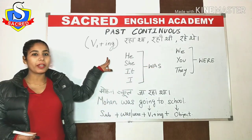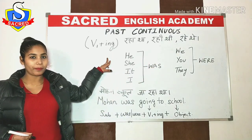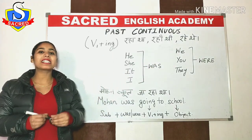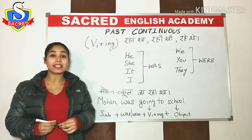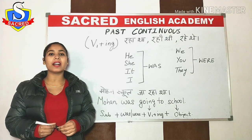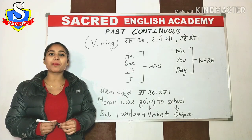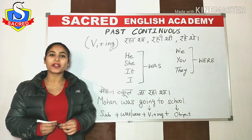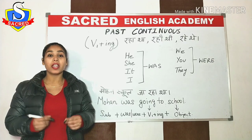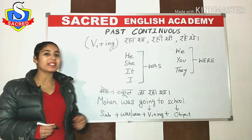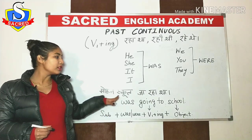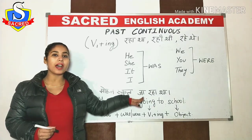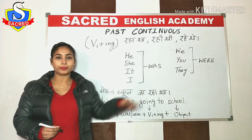So let's see with the help of an example to understand when to use the past continuous tense. The first example is: Mohan school ja raha tha — Mohan was going to school.